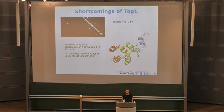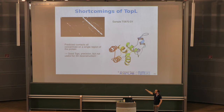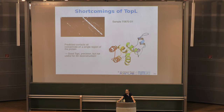If the long-range contacts are all concentrated in one region, top-L precision can be high even though the predictions don't cover the full structure. You might model that one region correctly, but have no information about the rest — so the folding will likely fail. This really reinforces the point that you need to look at several different metrics to get a full picture of predictor quality.